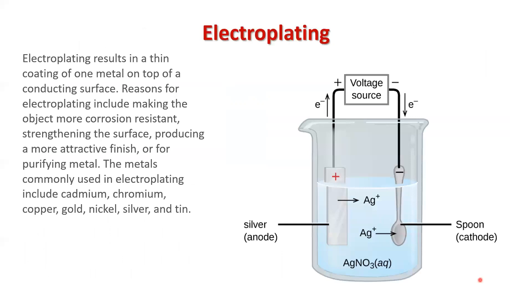Electroplating. Let's say that we have a solution of silver nitrate and we put in a silver electrode and we put in some spoon. If we add in an electrical source, we're going to electroplate this spoon with silver.